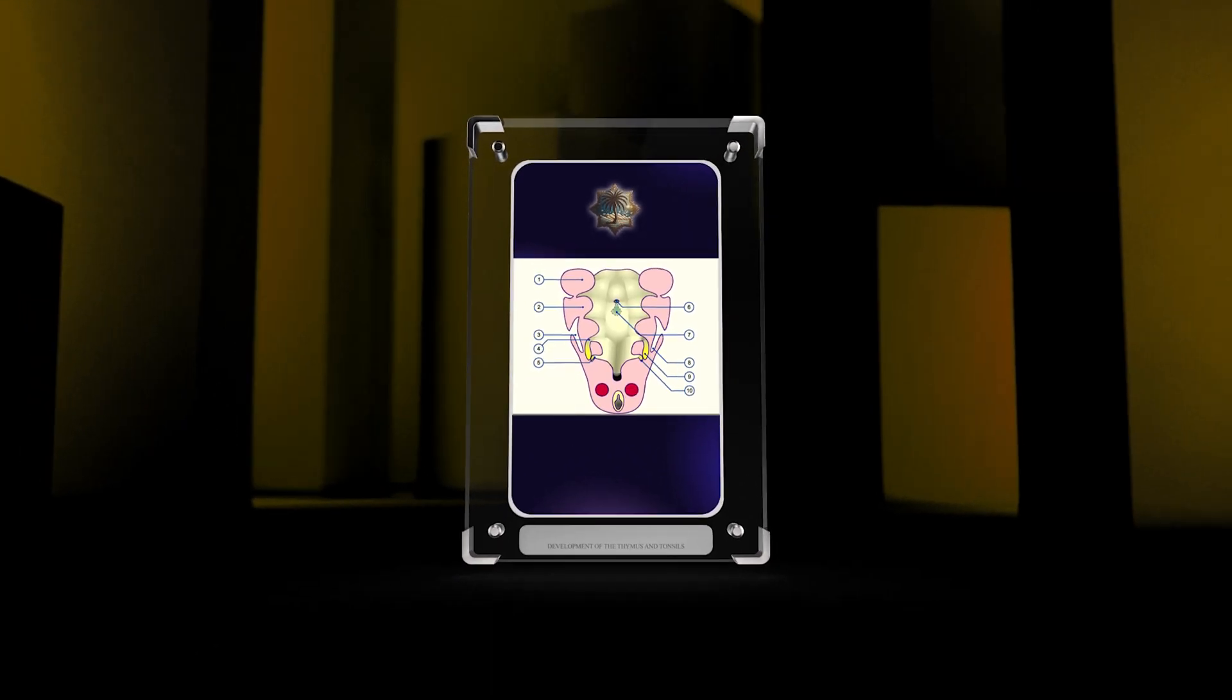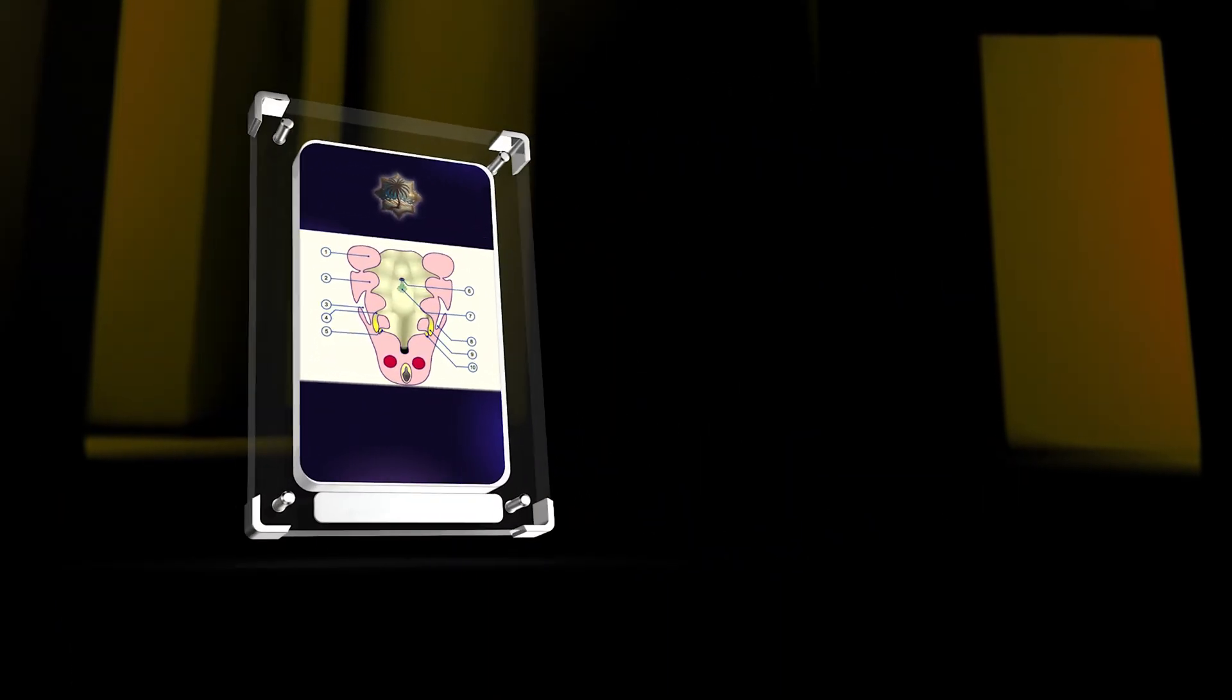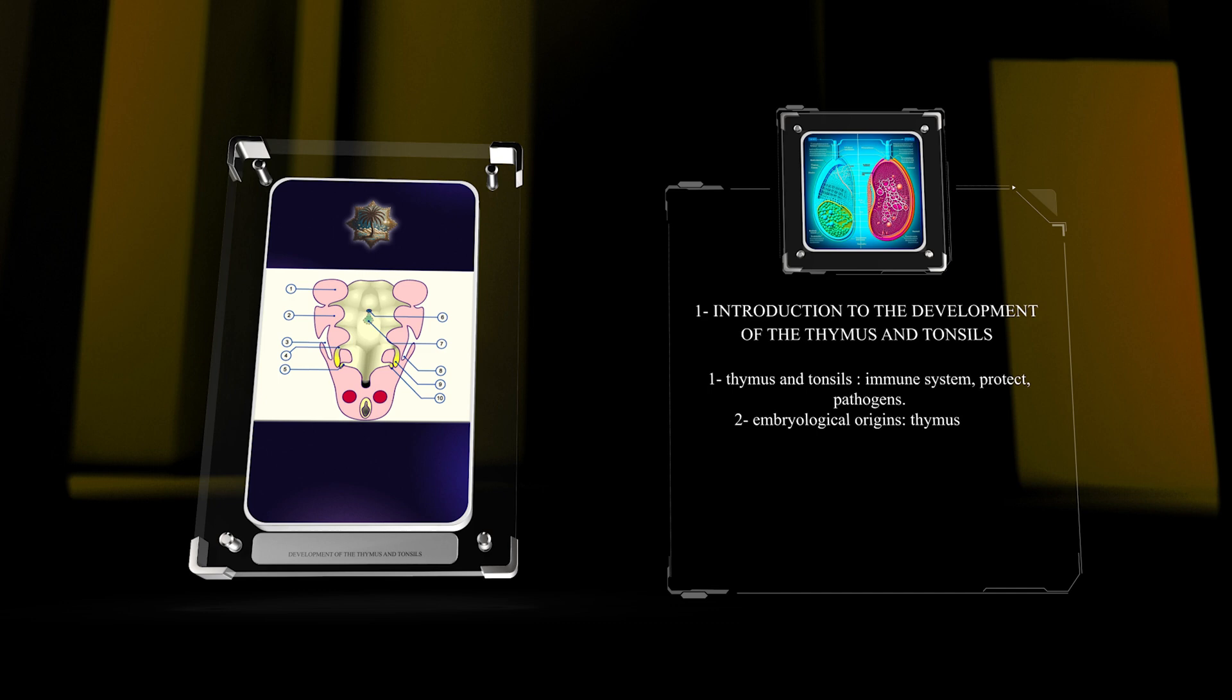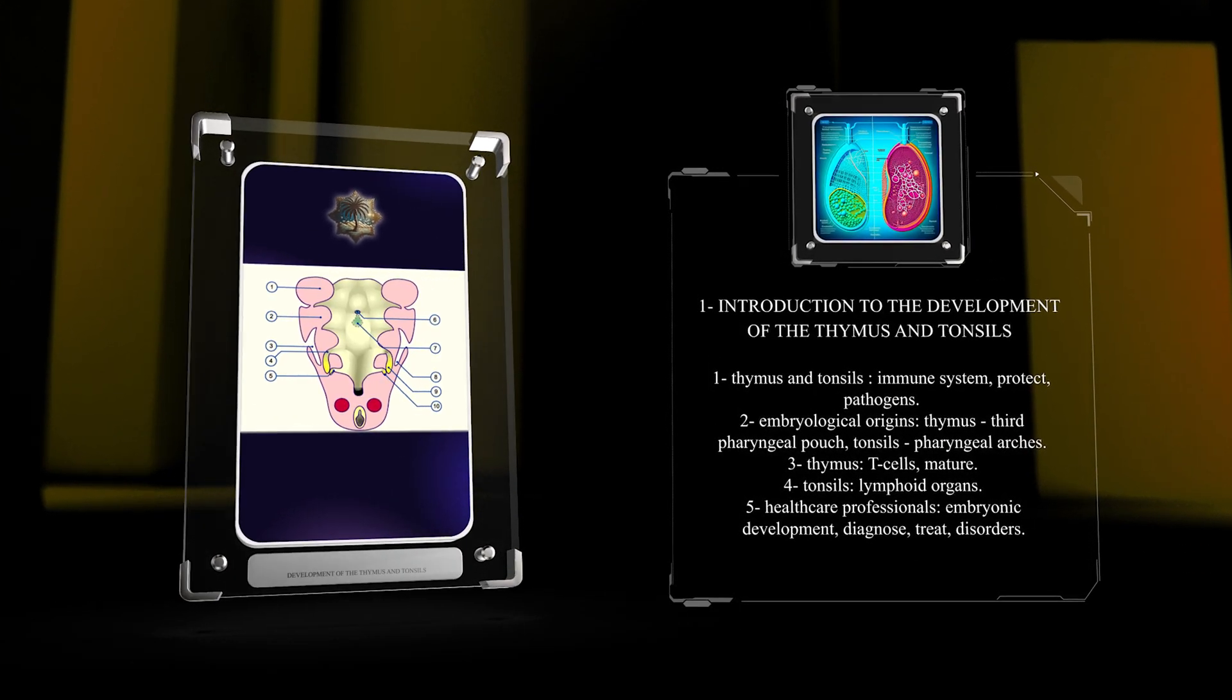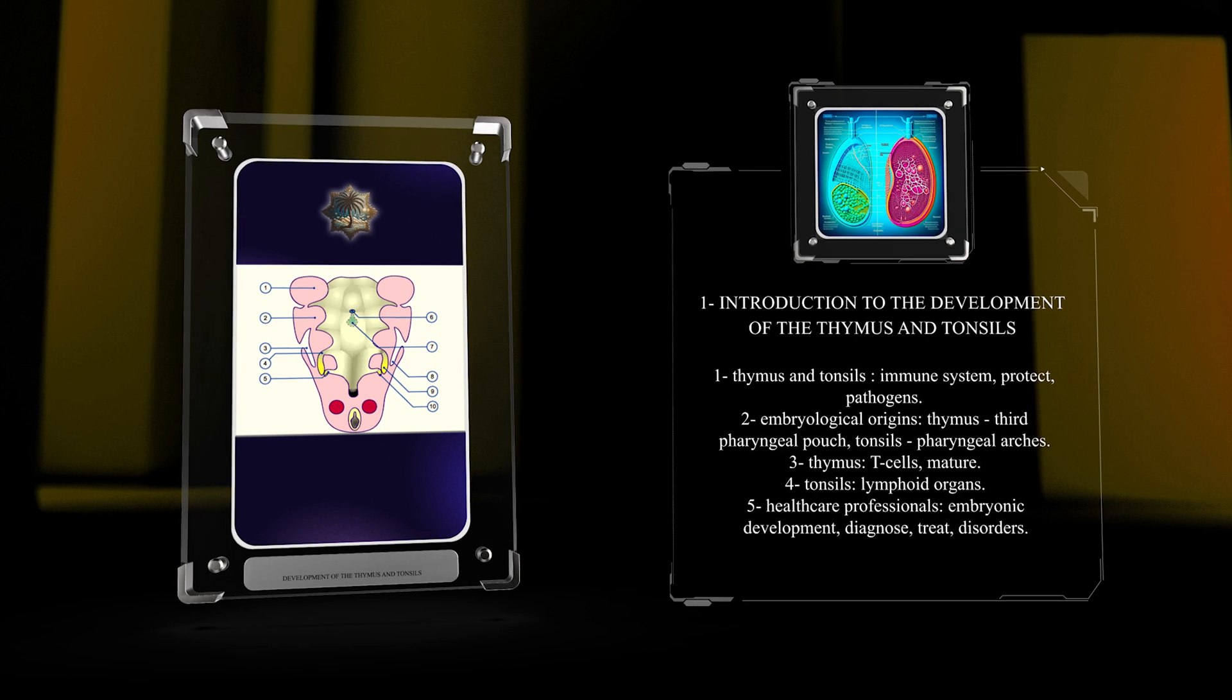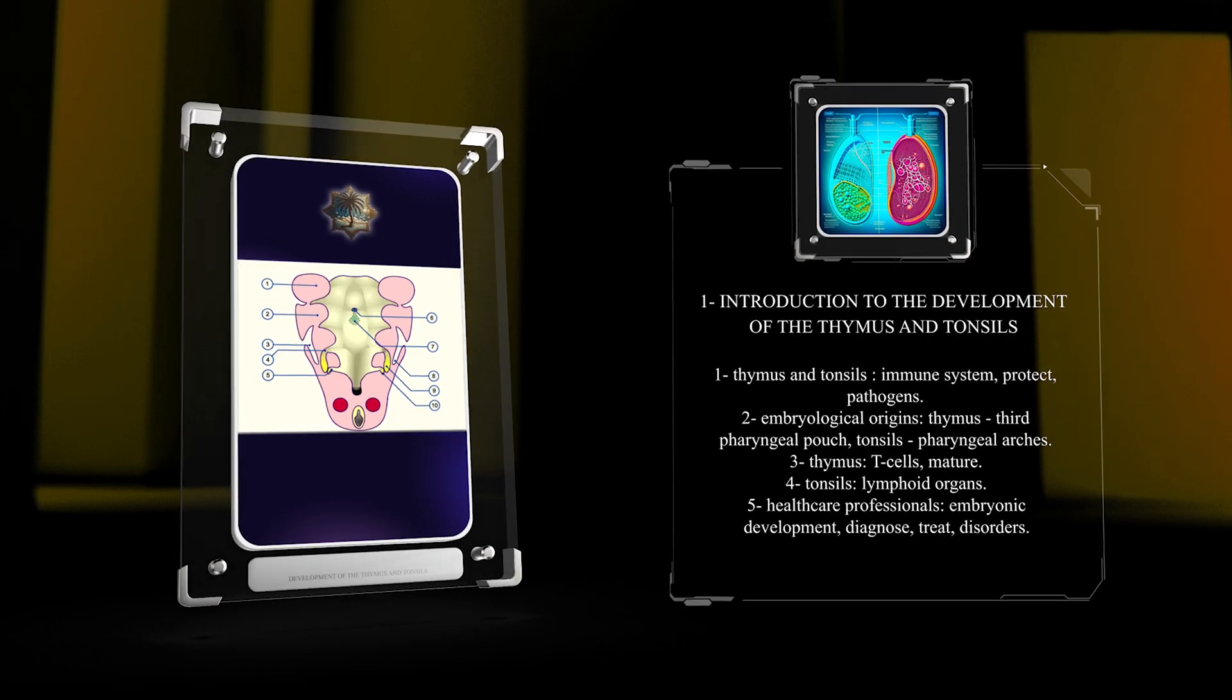Join us on this journey through the embryology of the thymus and tonsils. The thymus and tonsils are crucial for our immune system, protecting us from pathogens. Understanding their embryological origins is essential. The thymus comes from the third pharyngeal pouch, while the tonsils originate from the pharyngeal arches.